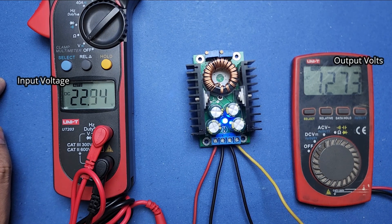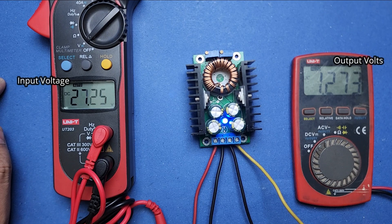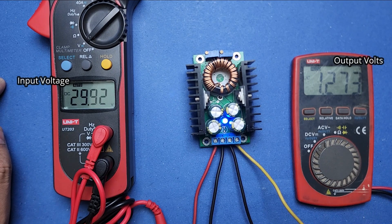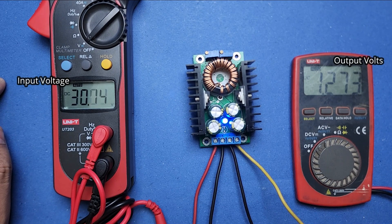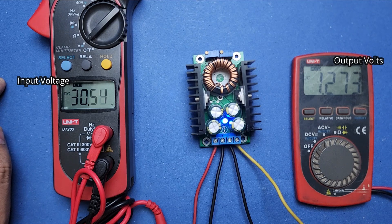Now the left meter shows the input voltage and the right meter shows the output voltage. You can see that I am increasing the input volts but the output volts remain the same.